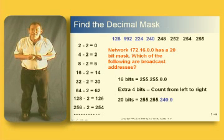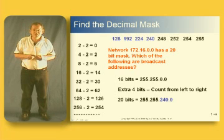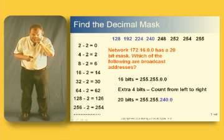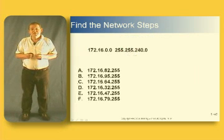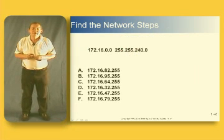Now we can use that to find out which of these are broadcast addresses, which ones are hosts and so on. So there's what we've got. We've got a class B address of 172.16.0.0 with a mask of 255.255.240.0.